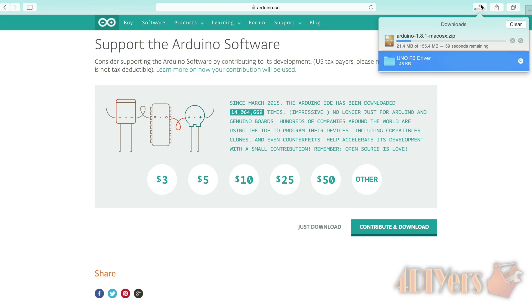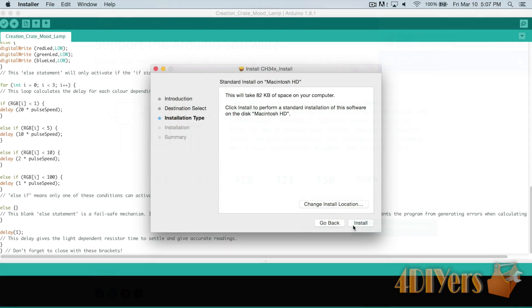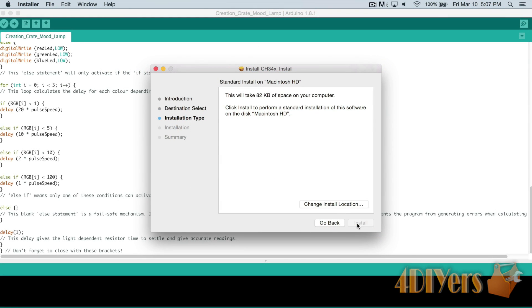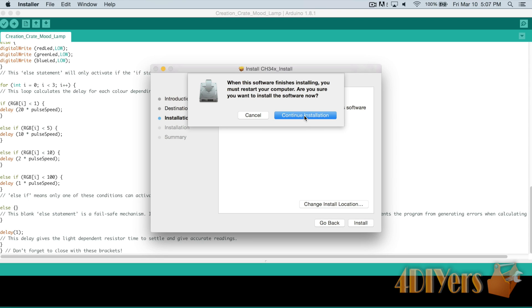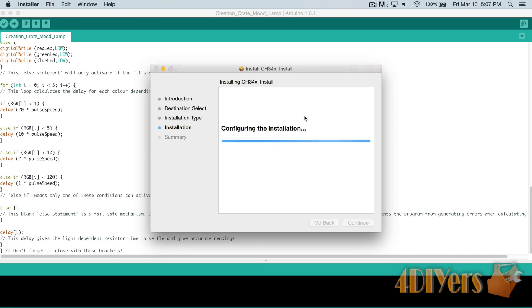If you are working with a Mac, a driver is required so you can view the circuit board, which Creation Crate provides on their website and provides a link in their description as well. Once the driver has been installed, download the Arduino software from Arduino's website. It's very easy and straightforward.